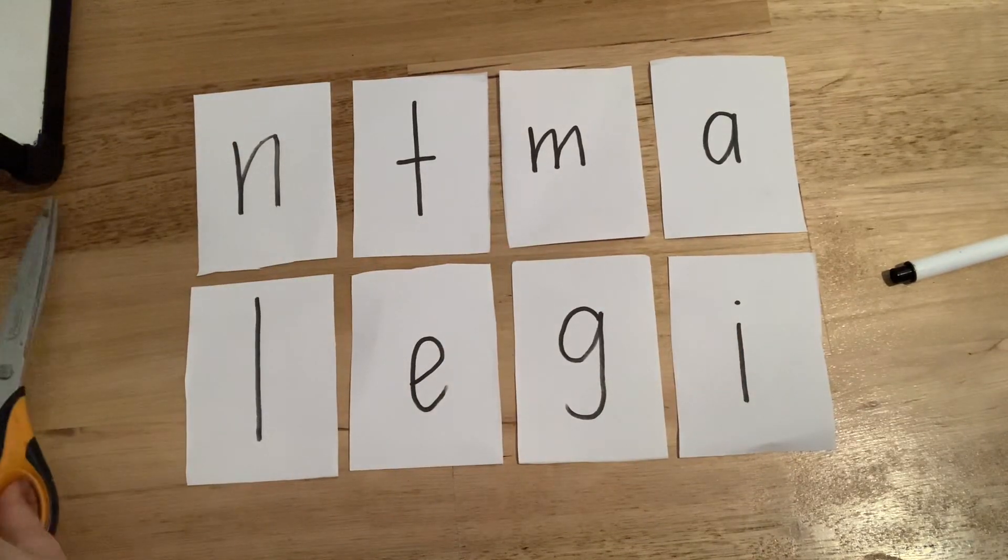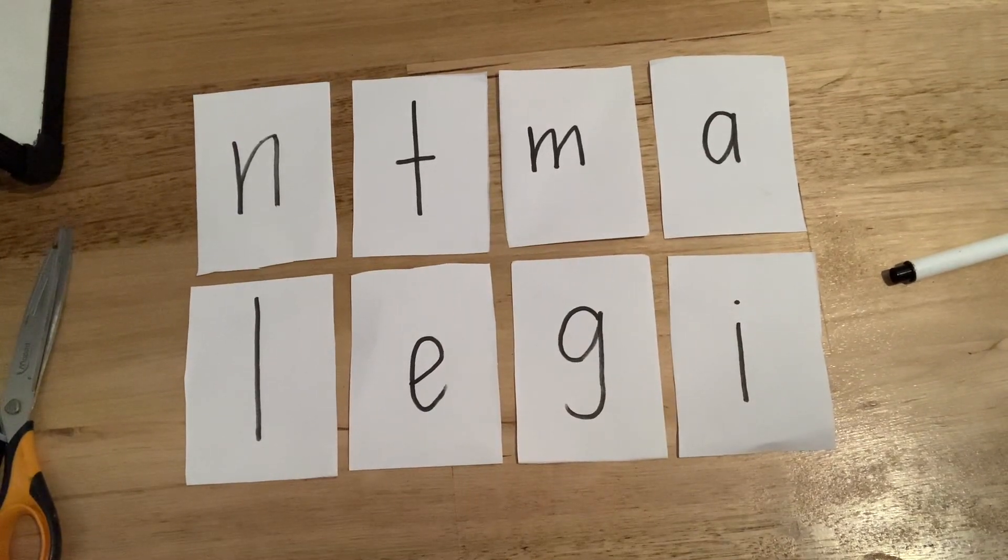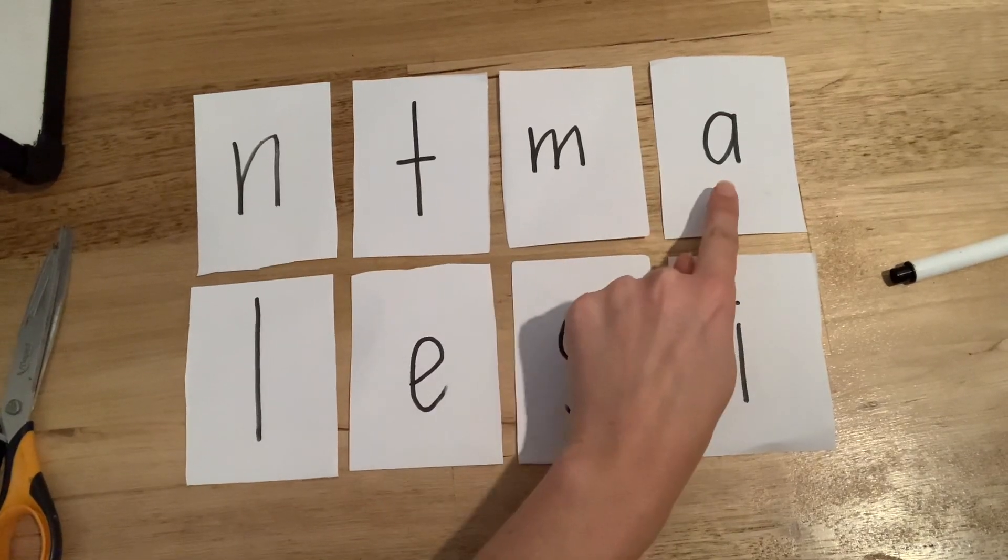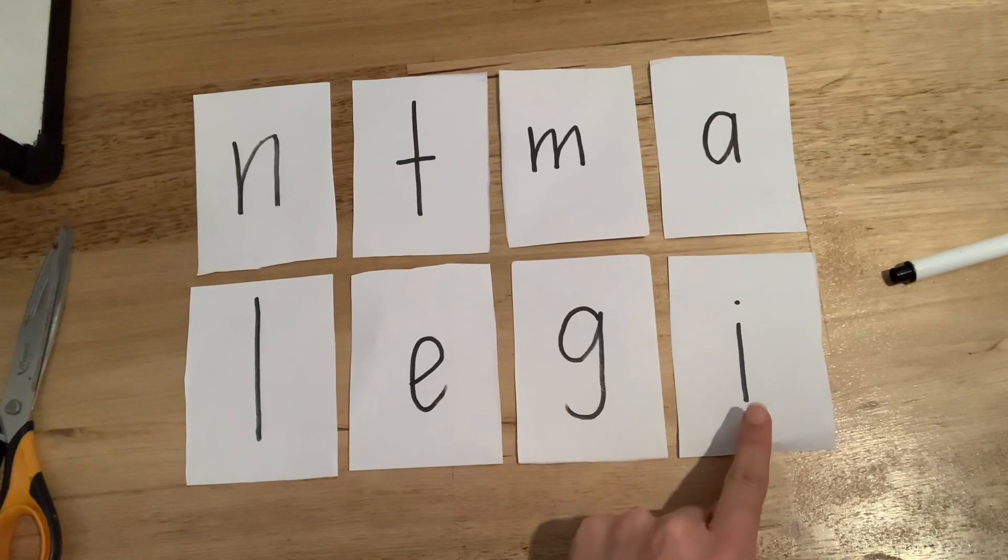Once I did that, I wrote these letter sounds on each of the eight rectangles. So I've got N, T, M, A, L, E, G, and I.